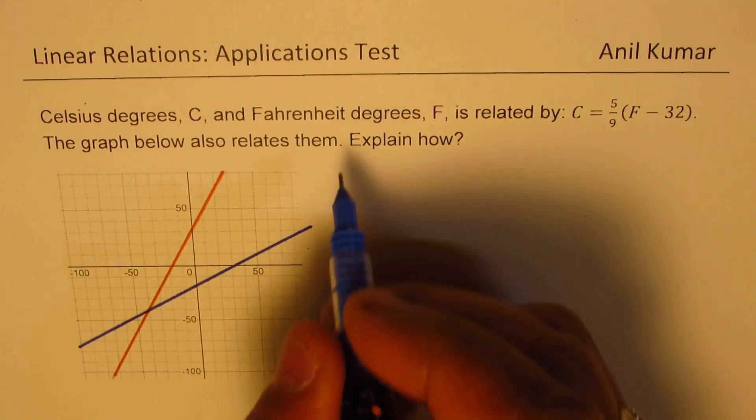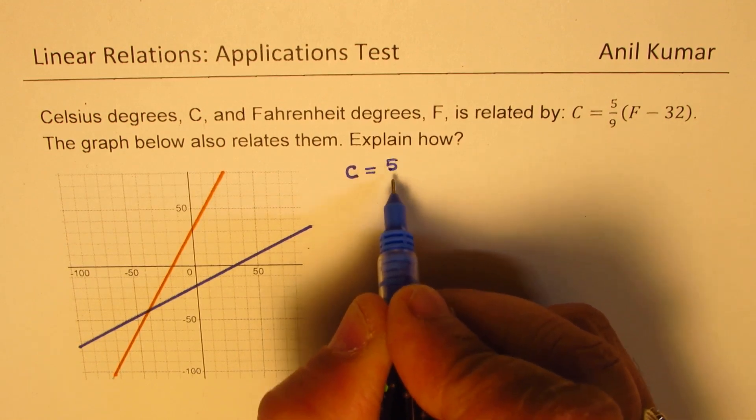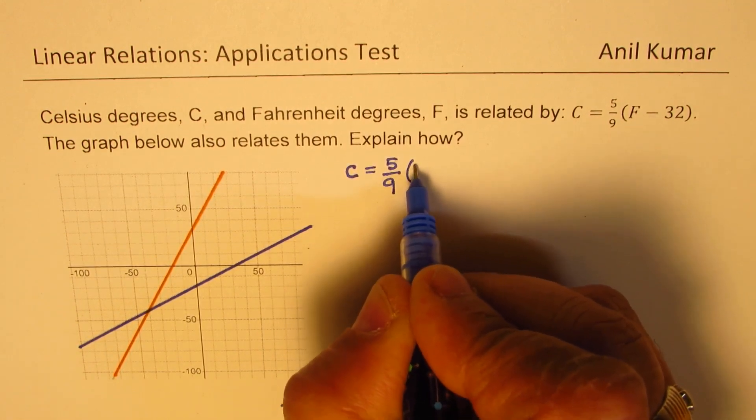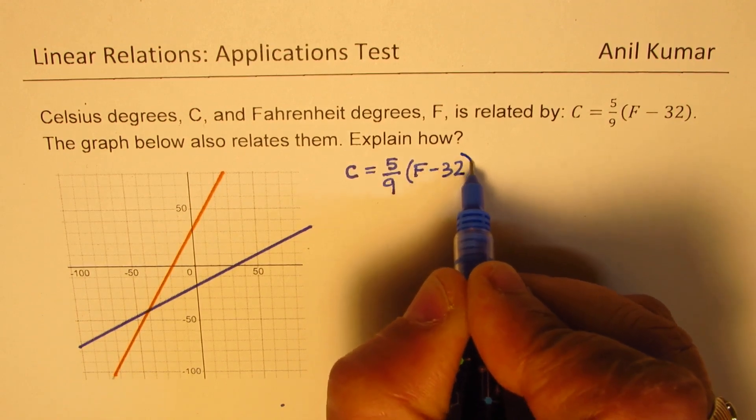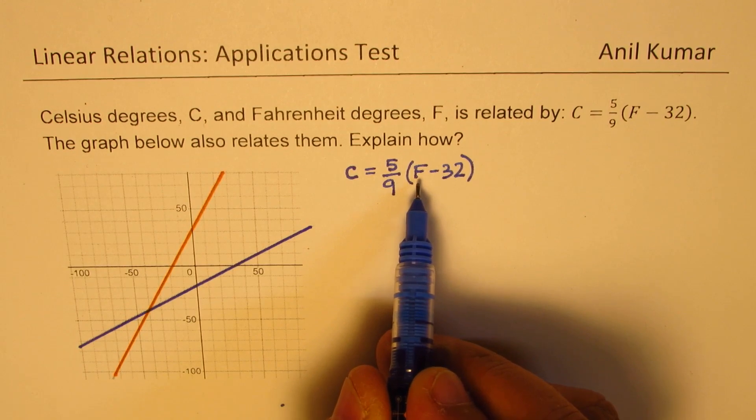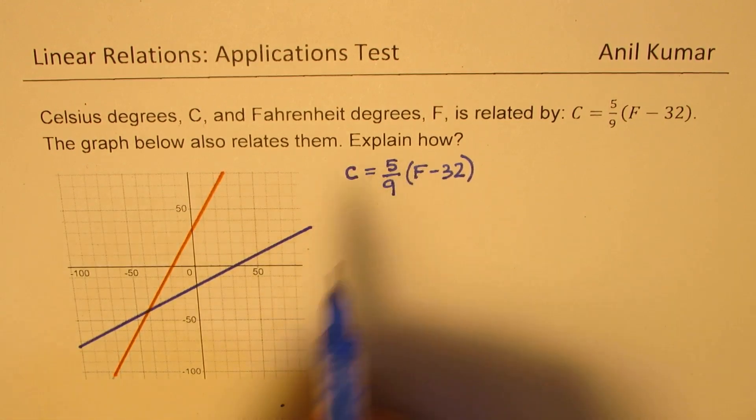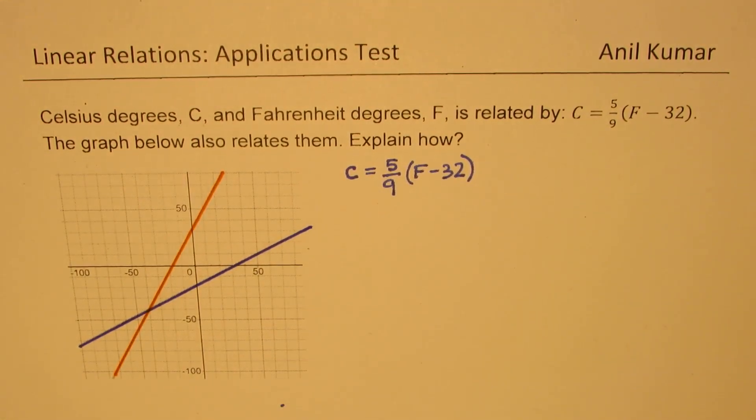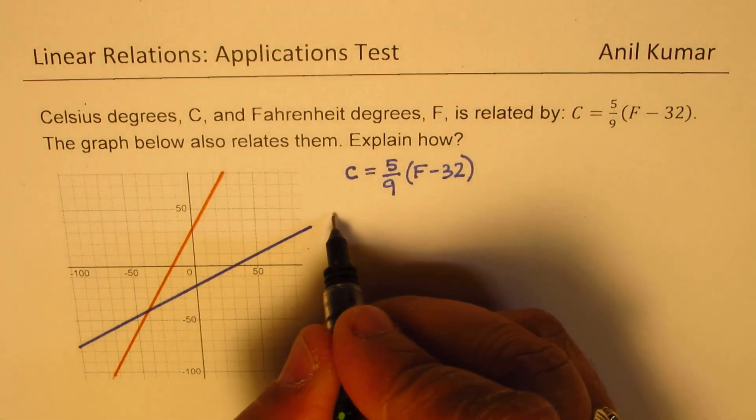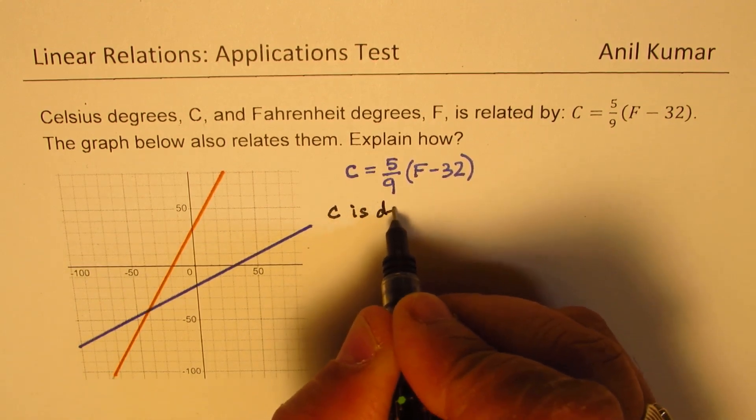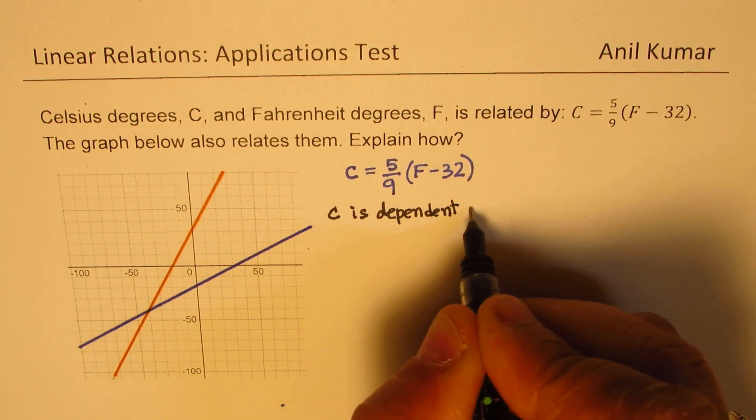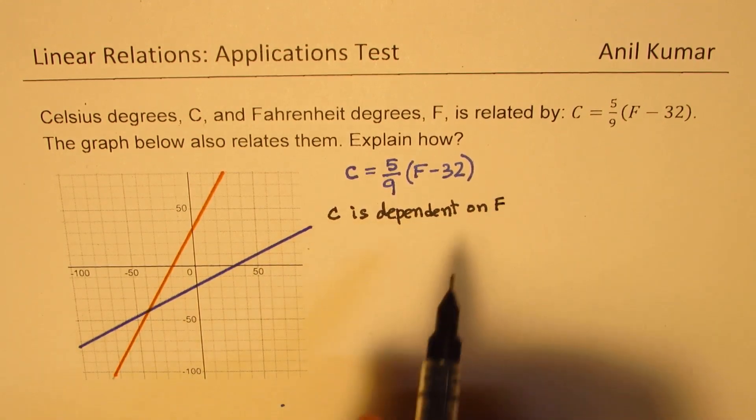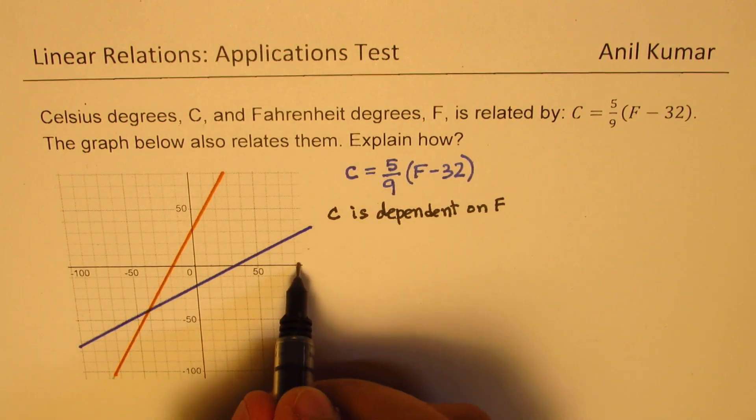Let's begin with the relation given to us when we say C is equal to 5 over 9, F minus 32. In that case, F is our independent variable, and C is dependent variable. In a linear relation, we have one variable which is independent, and the other is dependent on the other one. So in this particular case, C is dependent on F. Therefore, F will be plotted on the x-axis.